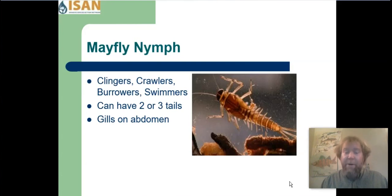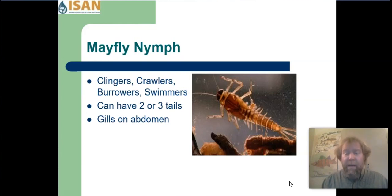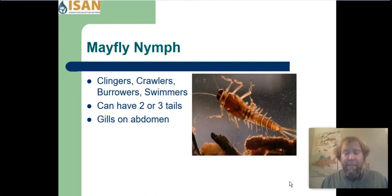Mayflies can be broken into four behavioral groups: clingers, crawlers, burrowers, and swimmers. We don't have many burrowers in Montana because of our rocky river bottoms, but we do have a lot of swimmers, crawlers, and clingers. The mayfly pictured here would be considered a swimmer — it has a streamlined body and can cut through the water effortlessly. Clingers have a flattened body and can cling to rocks in the fastest currents. Crawlers have strong legs to navigate the bottom to find food in rivers, ponds, and lakes.